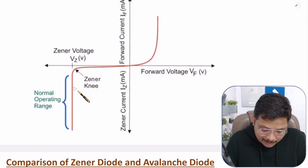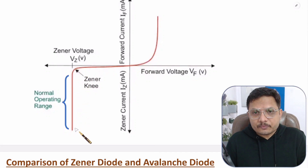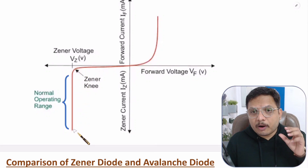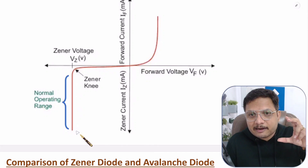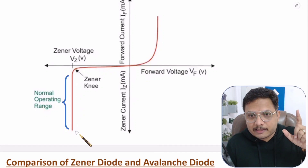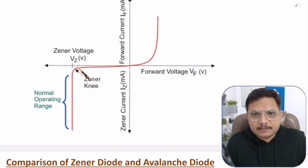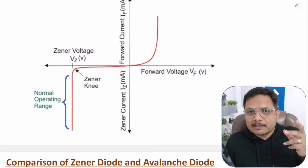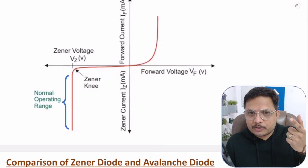Current will increase after breakdown. Here, what we will be doing is using Zener diode as a voltage regulator in reverse bias. Once breakdown happens, that voltage will appear at the output side.